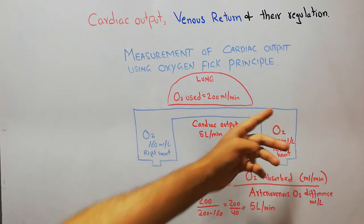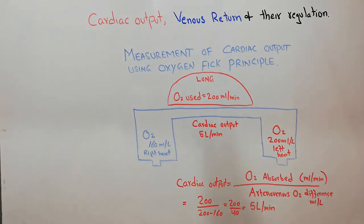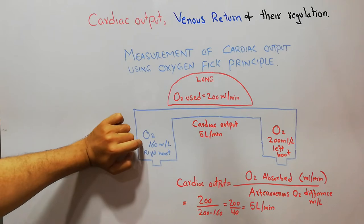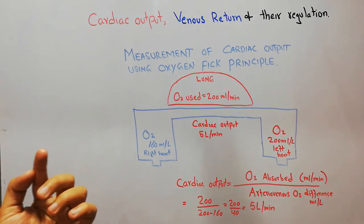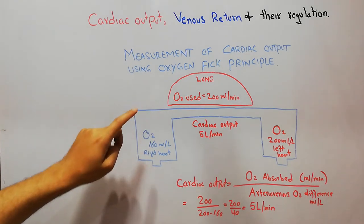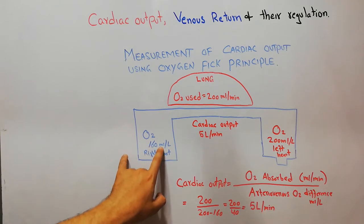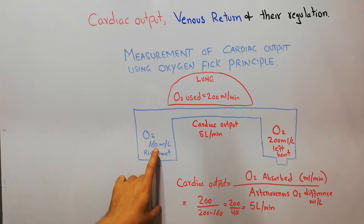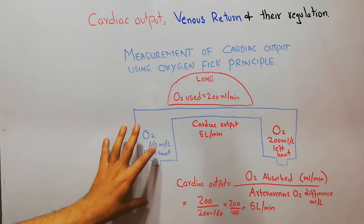From the right ventricle the blood goes into the lungs, where it gets oxygenated. Then from the lungs it goes into the left side of the heart, or the left ventricle, which pumps the blood into the body. By putting a catheter or cannula through the brachial veins into the right atrium, we have calculated that the oxygen concentration in the right heart is 160 ml per liter of blood.